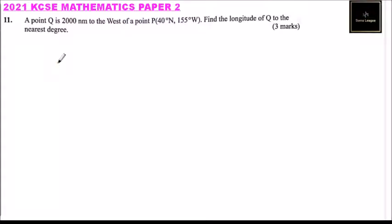This is question number 11. A point Q is 2,000 nautical miles to the west of a point P, 40 degrees to the north, 155 degrees to the west. Find the longitude of Q to the nearest degree.